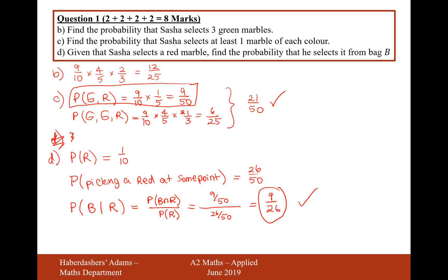So there we are, that's the answer for question one in total — a nice little probability question, but difficult on part D where you have to use the conditional probability formula. That's question one worth eight marks in total. Let's now move on to question two.